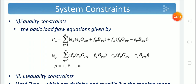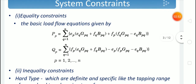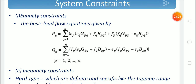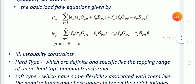There are two types of constraints: equality constraints and inequality constraints. Equality constraints are mainly active and reactive power constraints depending on the load. The basic load flow equations are the equality constraints, and the load requirement should be equal to power demand. Here, EP and FP are real and imaginary parts of the voltages, and GPQ and BPQ are conductance and susceptance between the buses. There will also be inequality constraints where the power should be within some limits.